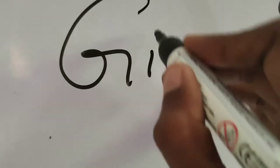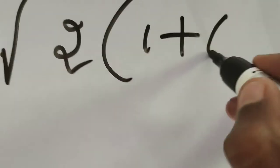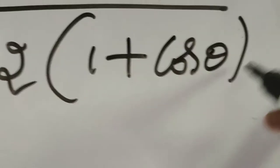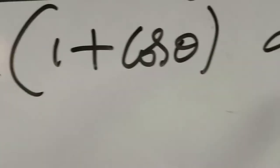First of all, here I write the given integral. The given integral is: integral from 0 to π of √(2(1 + cosθ)) dθ. This is the given integral.